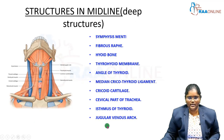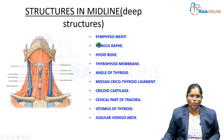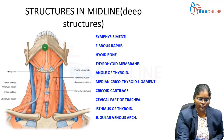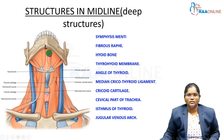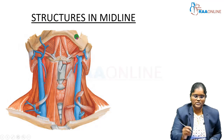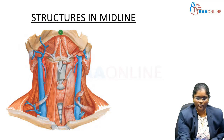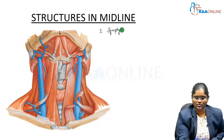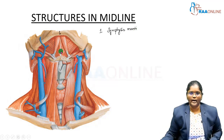These are the structures listed in the anterior midline, and these are the deeper structures in the midline of the neck. The first structure is the symphysis menti — this is the meeting point of the two sides of the mandible.